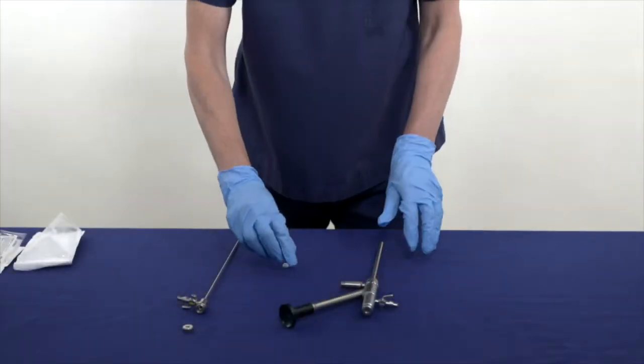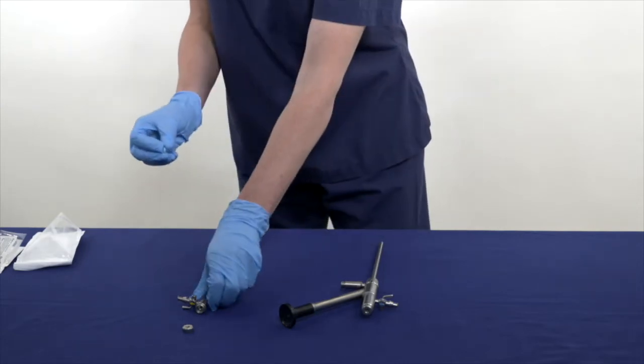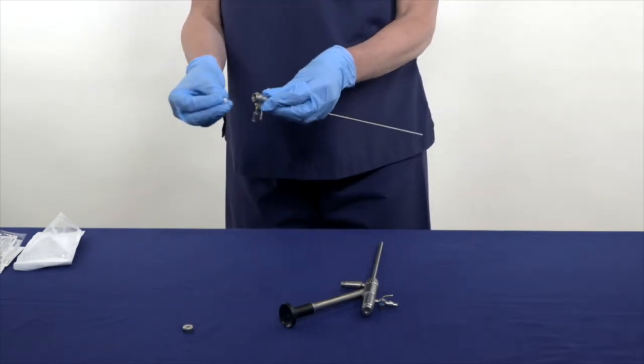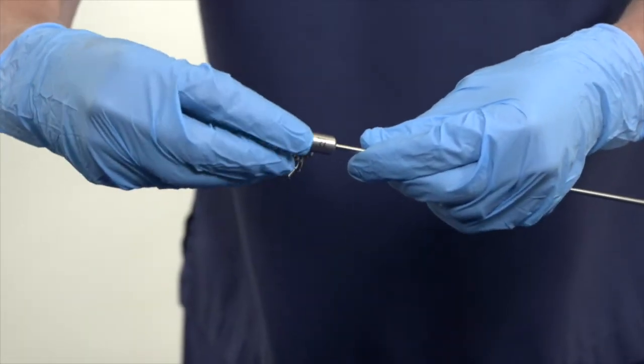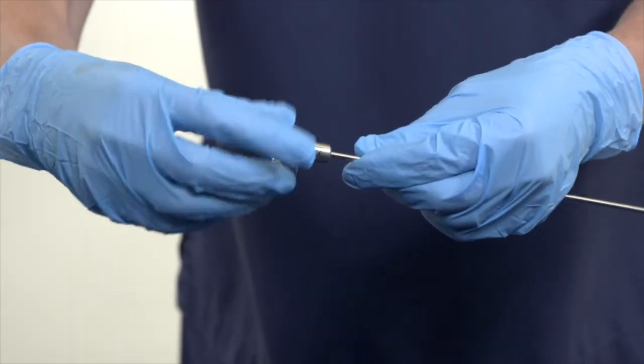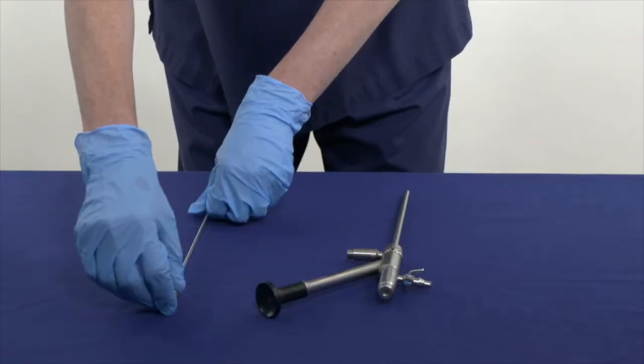Insert the second seal into the end of the outflow channel, again ensuring the dome shape is facing down, and screw on the end cap. Now let's prepare the Aqualex system.